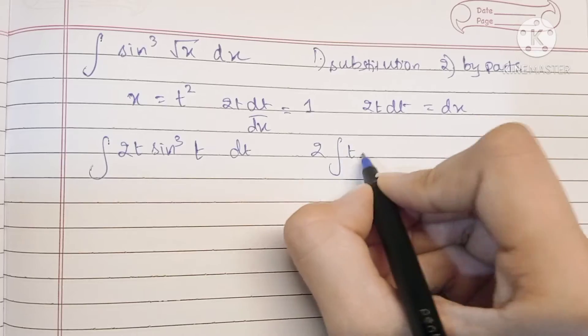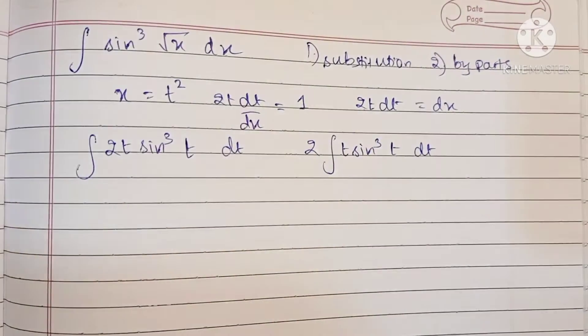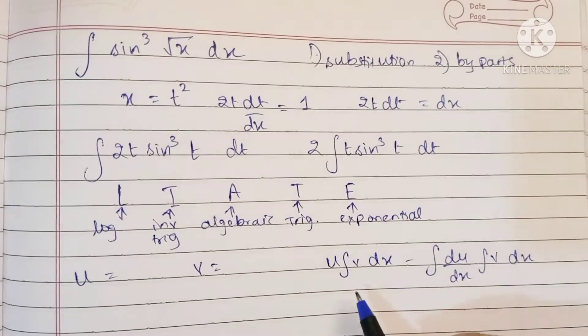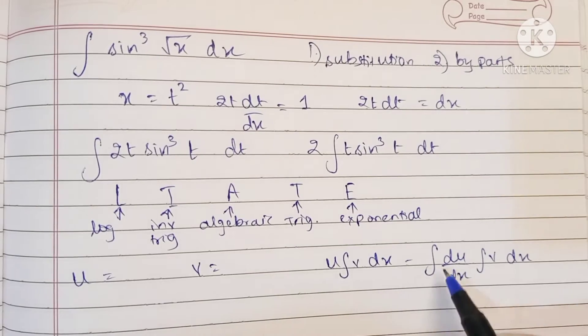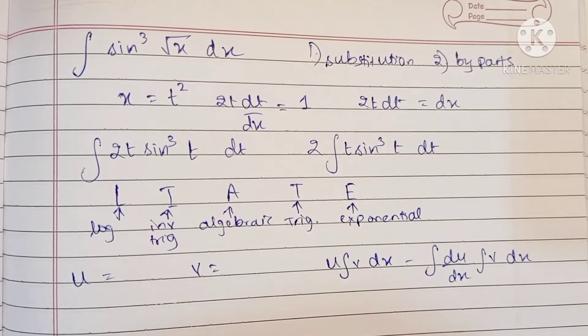Now we will be using the by parts rule. So the by parts formula is u into the integration of v dx minus the integration of differentiation of u into the integration of v dx.